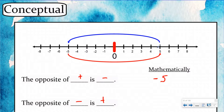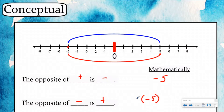We started with five and wanted to make it negative five, so we put the negative sign in front of it. Well, if we start with our negative five and we want to make that the opposite, we learned last lesson that you could write a negative sign in front of it. So if we put this in parentheses and we want the opposite of negative five, all we have to do is write a negative sign in front of that.